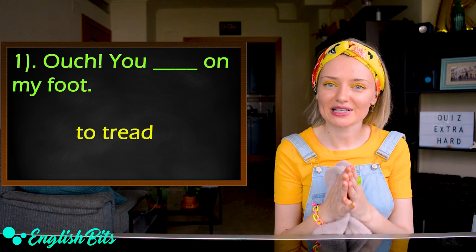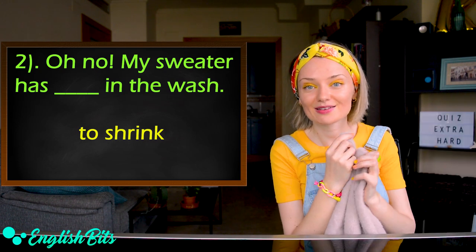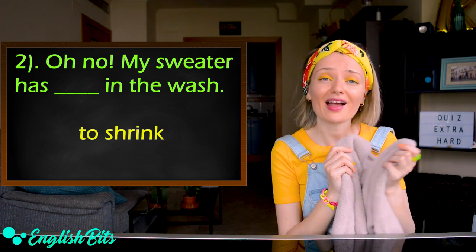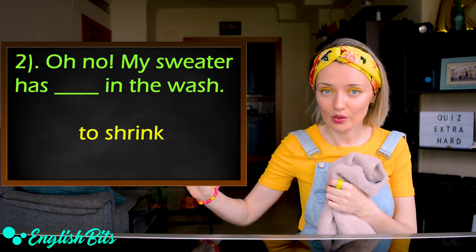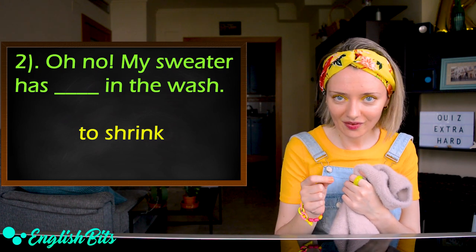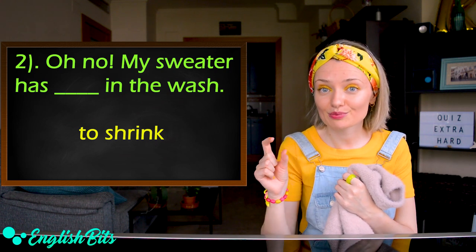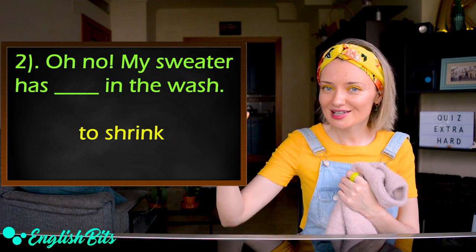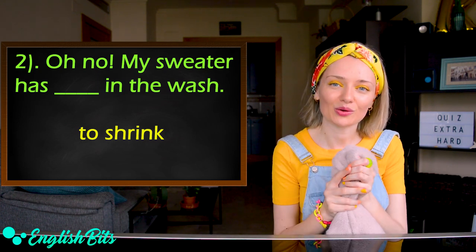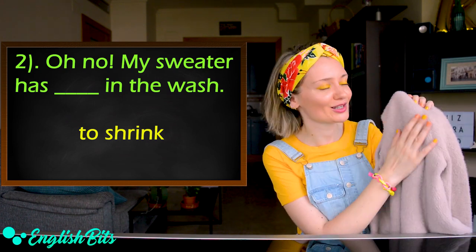Let's move on to our second question. Oh no, my sweater has [gap] in the wash. The verb you have to use is to shrink. You need to use present perfect, so it's the third column — past participle. Write down your answer. And this is my favorite sweater, it's so soft.